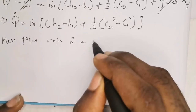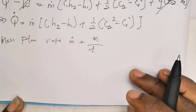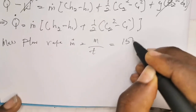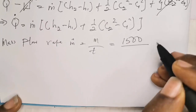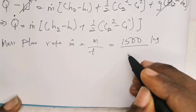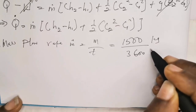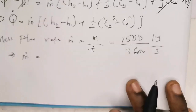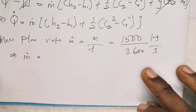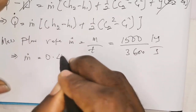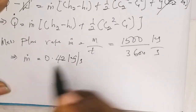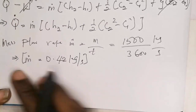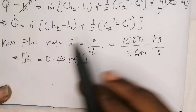Mass flow rate ṁ simply means mass divided by time. Mass was given as 1,500 kilograms and time is 3,600 seconds, so ṁ = 1500 / 3600, which gives approximately 0.42 kilograms per second.